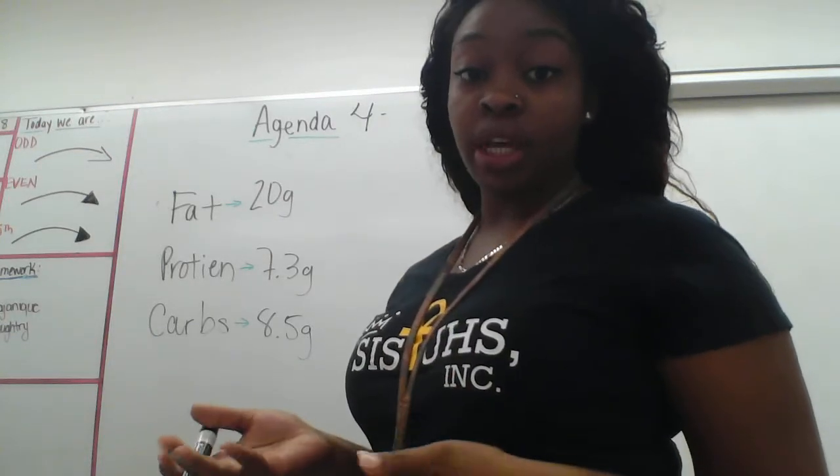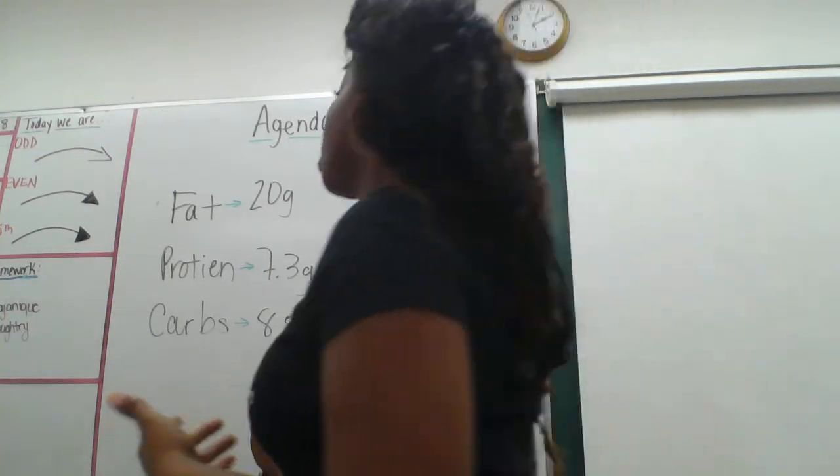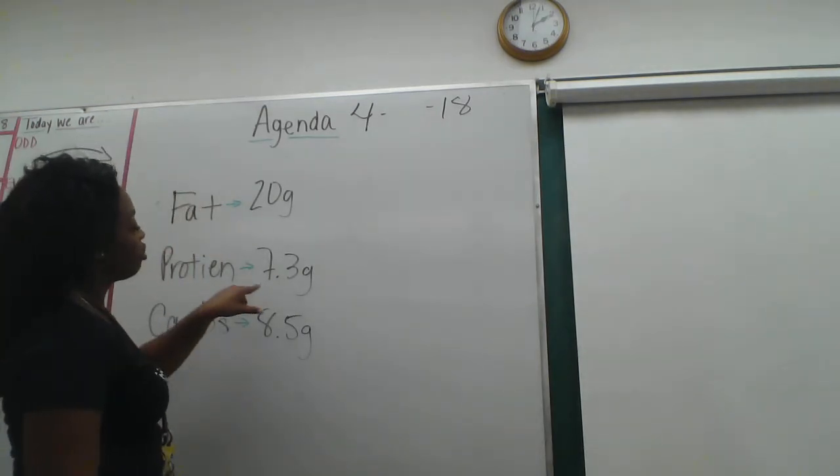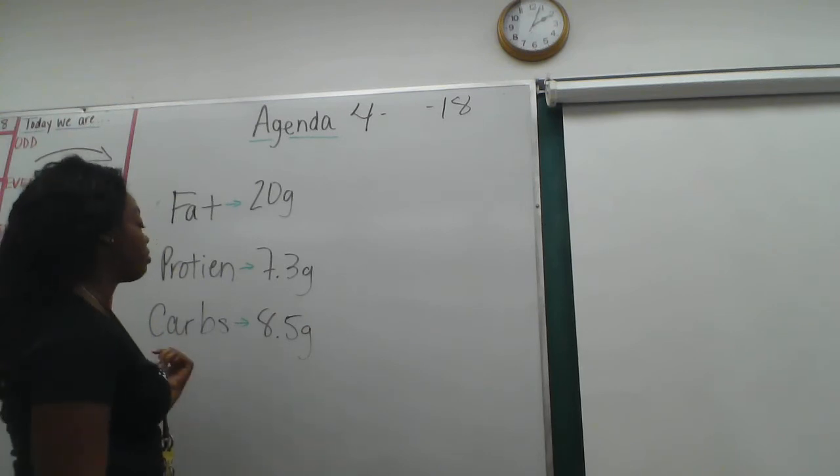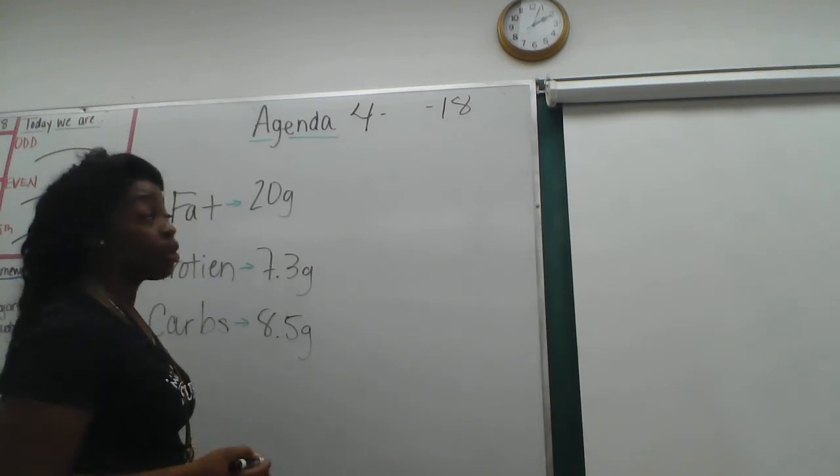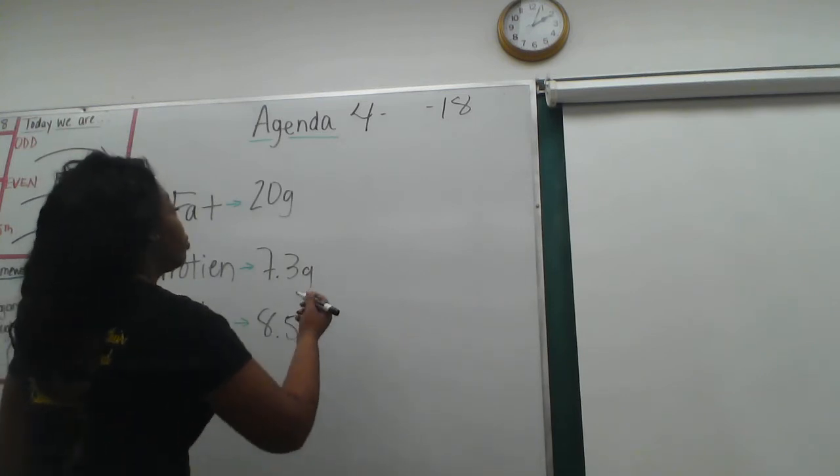Okay, so this is how you want to do this math problem. When you have 20 grams of fat, 7.3 grams of protein, and 8.5 grams of carbs, remember there are certain numbers for each category. For fat, you remember that it's times 9 to get the calories.